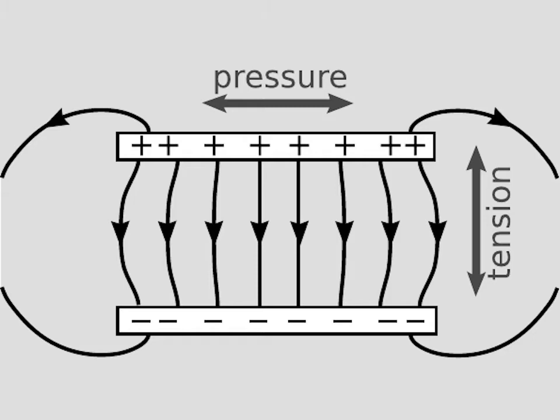we have a rule that electric field lines give us tension along the electric field lines, and then pressure in the direction perpendicular to those field lines. So you can see that that makes sense here in this example of the capacitor.